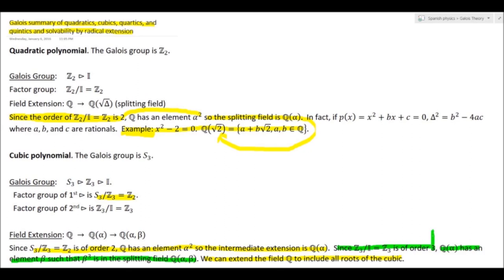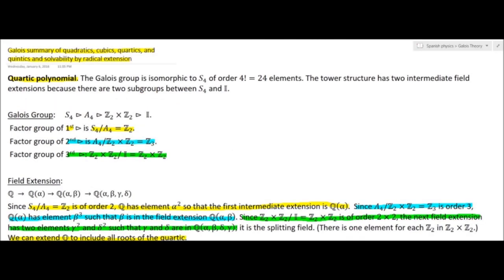For the quartic, the tower is S4 → A4 → Z2×Z2 → {1}. The ratio S4/A4 is order 2, so there's a number α with α² rational — a square root in the field extension. The next ratio A4/(Z2×Z2) is Z3, so there's a number with a rational cube root. Then Z2×Z2 contributes numbers γ and δ with γ² and δ² rational, so γ and δ are in the field extension — and we can extend the rationals to include all roots of the quartic.